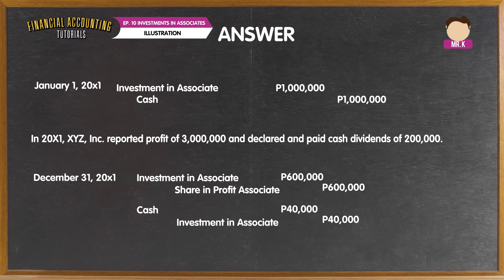As you can see from the journal entries, both share in associate's profit and dividends received are closed to the investment in associate account. Under the equity method, cash dividends received are not income but rather treated as a deduction to the investment in associate. Also, the net increase in the investment in associate account is equal to the share in the associate's profit minus the share in cash dividends.